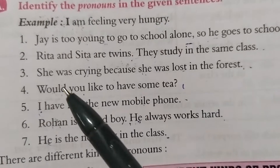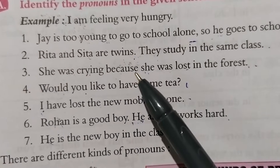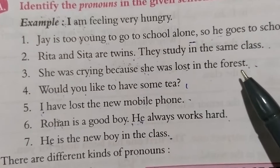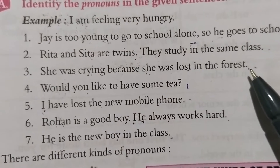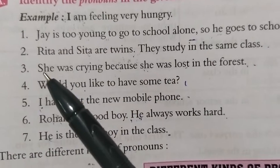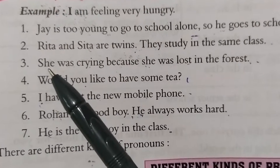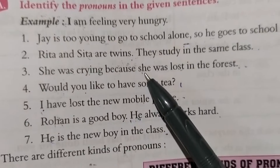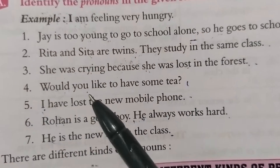Number three: She was crying because she was lost in the forest. Woh ro rahi thi kyunki woh jungle mein kho gayi thi. Is mein pronoun hoga 'she' — she was crying, kisika naam ke badle diya gaya hai, woh pronoun hai.